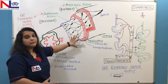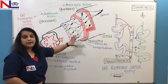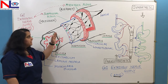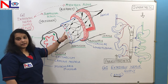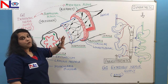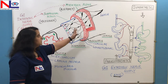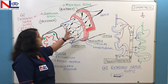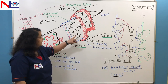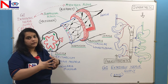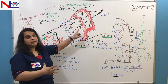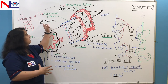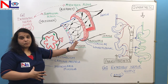Superficial to the mucosa is the submucosa. This layer also contains many blood vessels and lymph vessels, because the absorbed nutrients reach there. It also contains some lymphatic tissue, and it is made up of connective tissue that binds the mucosa to the muscularis layer. Very importantly, there is a network of nerve fibers here called a plexus — since it lies within the submucosal wall, it is called the submucosal plexus, or Meissner's plexus.